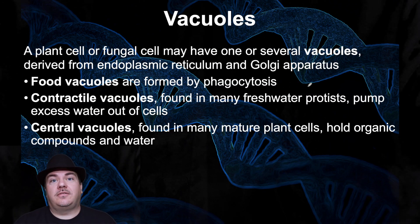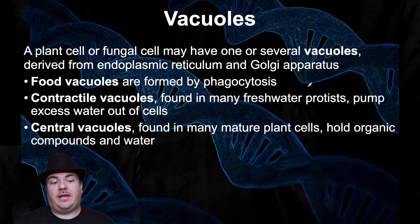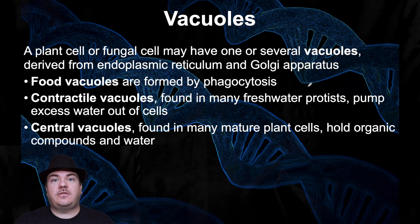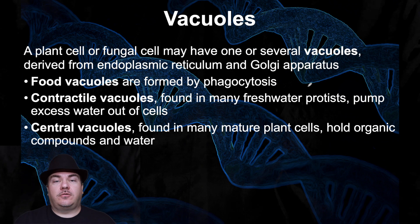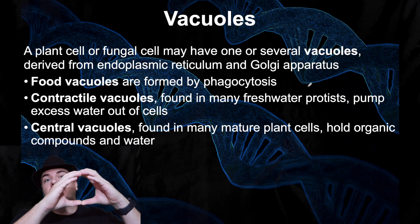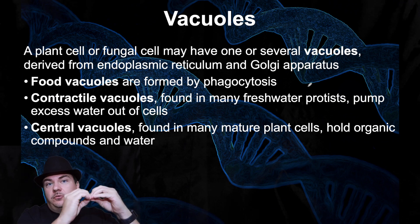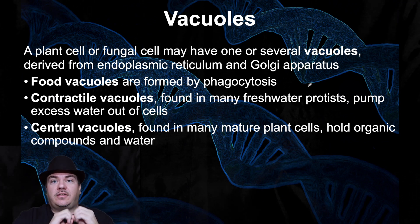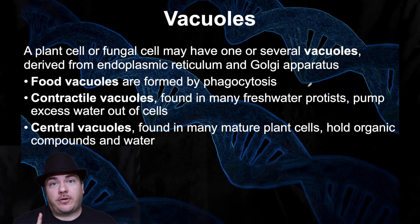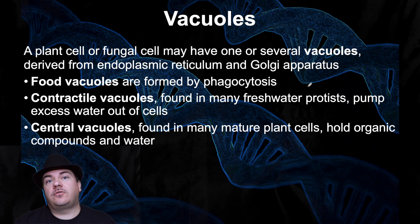Also part of the endomembrane system are vacuoles, which can be made by the ER or by the Golgi apparatus. There are different types of vacuoles. One type is a food vacuole, made by the process of phagocytosis. Another type is a contractile vacuole, which is a membrane sphere that can physically contract and squeeze — used to do things like expel water from certain types of cells. The one we're going to focus on now is called the large central vacuole.